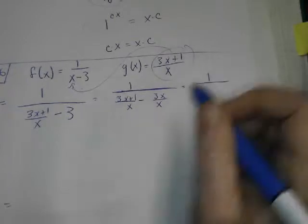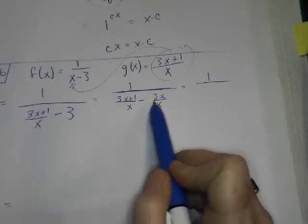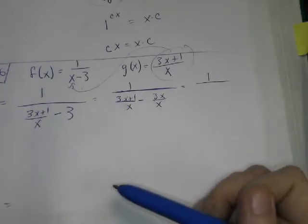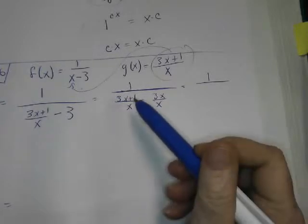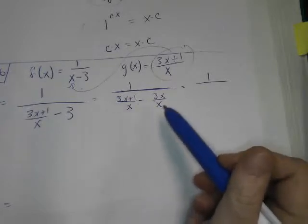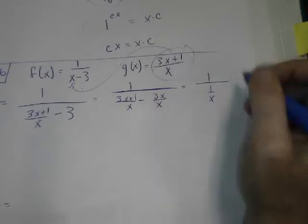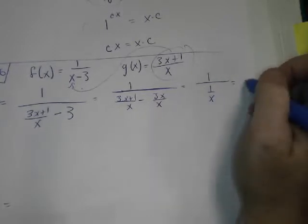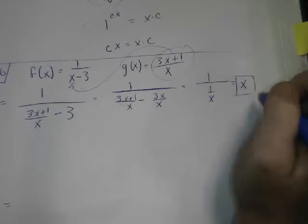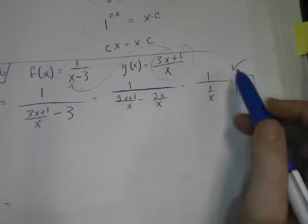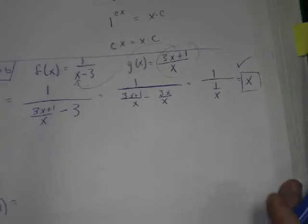And then I can say that's 1 over, well, 3x minus 3x is going to give me 0. But I have the 1 still over x, so I'm going to have 1 over x. Well, guess what? If I flip that thing upside down, what do I get? x, of course. I get x. Okay, so I'm just checking. So this one checks out that I think they're inverses so far.